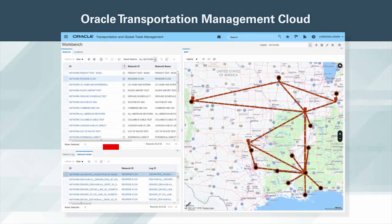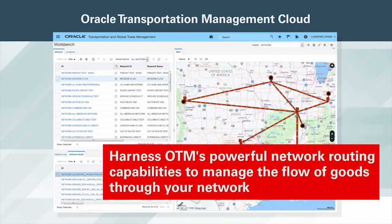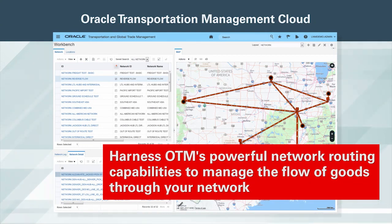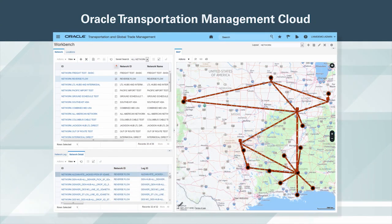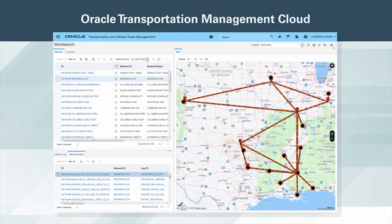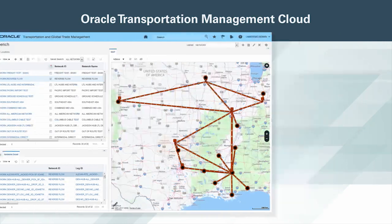Harness OTM's powerful network routing capabilities to manage the flow of goods through your network. Simply set up your carriers, rates, and through points, then let OTM identify the optimal route for your orders to take as they traverse the network.